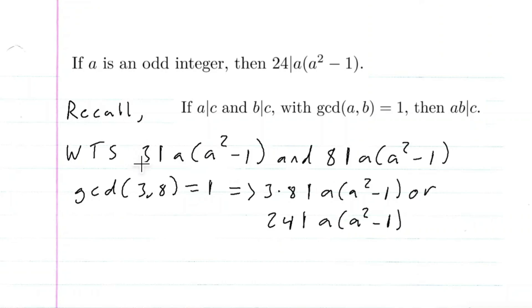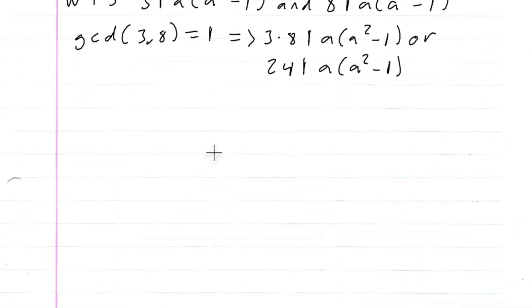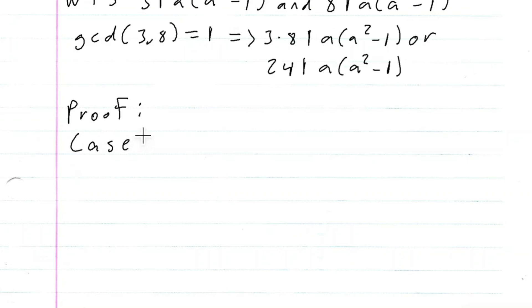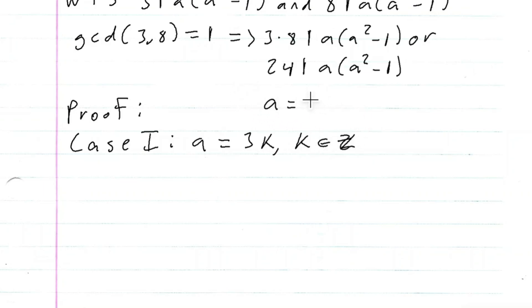First I'm going to show that 3 divides A times A squared minus 1. Using the division algorithm, I'm going to develop this into three cases. Case 1: let A be equal to 3K, where K is some integer. I'm using the division algorithm where A equals 3 times an integer plus R, where 0 ≤ R < 3. This takes all the forms that A could be where A is an integer.